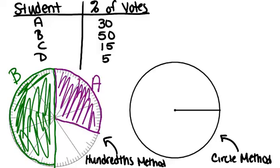Student C got 15%, so that's a whole wedge plus half of one. Finally, student D got 5%, which is this last part right here. Make sure all your percentages add up to 100%, or else your whole pie chart won't make sense.